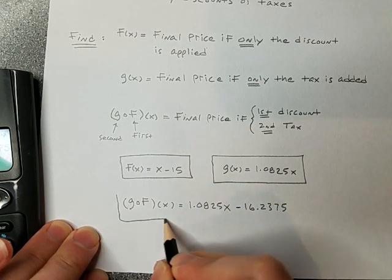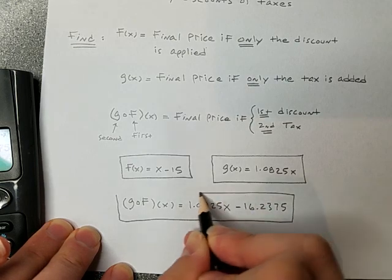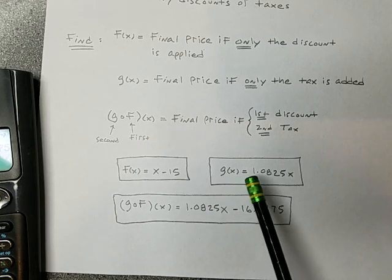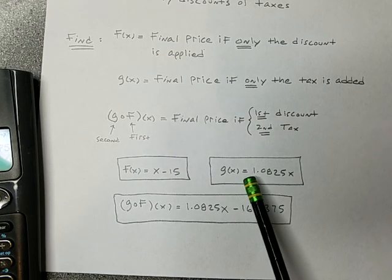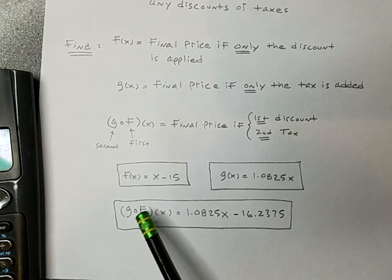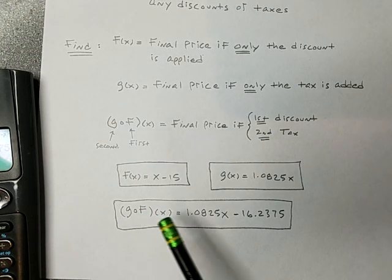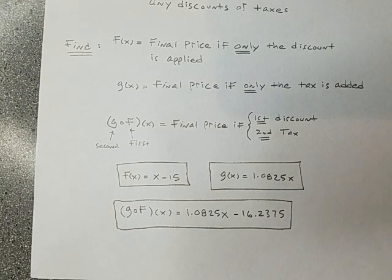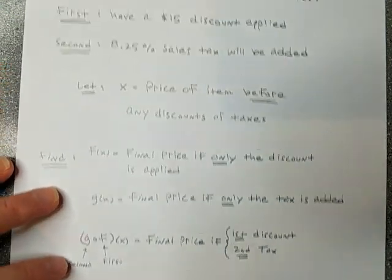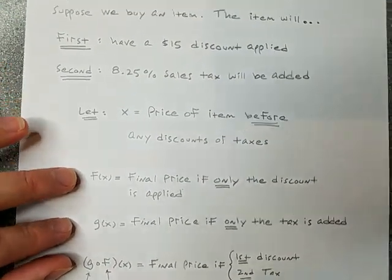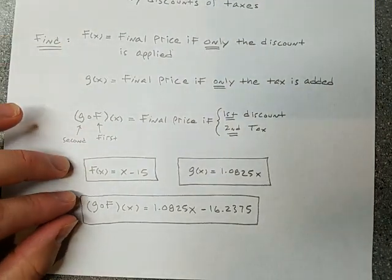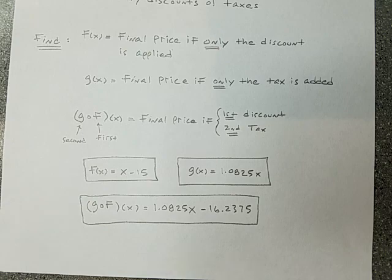And there it is. So I found each thing. I found the function that applies only the discount, the function that applies only the tax and the function that first applies the discount and then adds the tax. That's what that formula would do. Okay. All right. So do you understand all that? You see what I was looking for? Do you understand it in the context of the problem? And do you see my final answers for everything? Let's do one more thing.